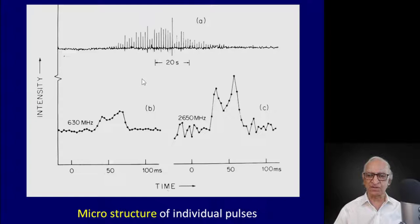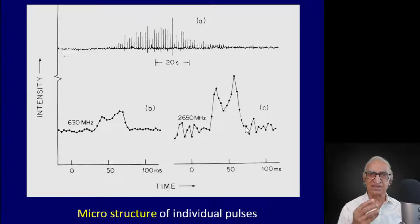When you expand the time axis — this is 100 milliseconds — you find that there is a considerable amount of fine structure within the pulse. It is this fine structure and the width of the fine structure in time, delta t, that tells us that the size of the emitting region has to be less than c times delta t, where c is the speed of light. It is using such an argument that Jocelyn Bell came to the conclusion that these pulsating objects must be neutron stars.